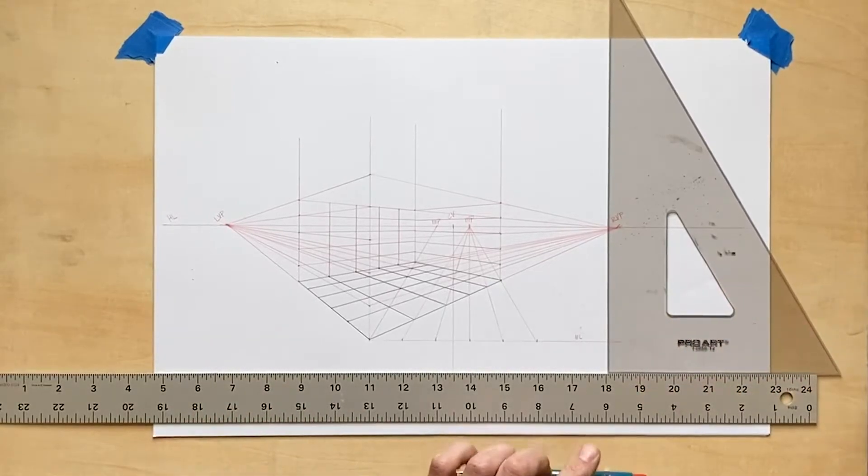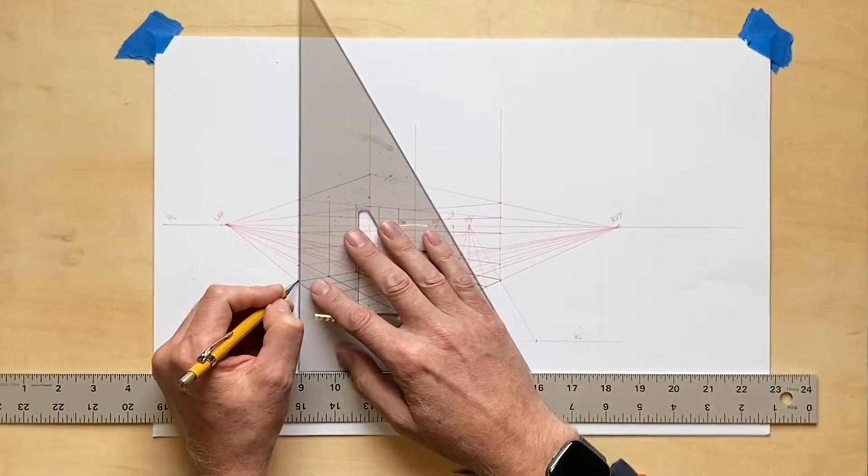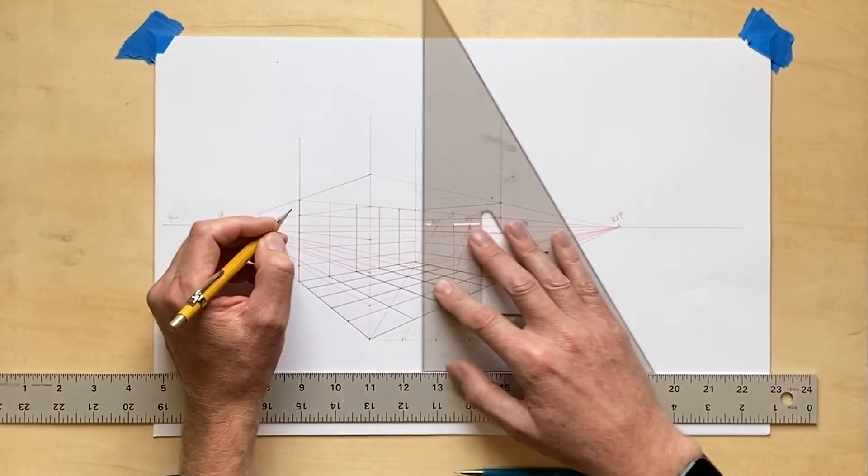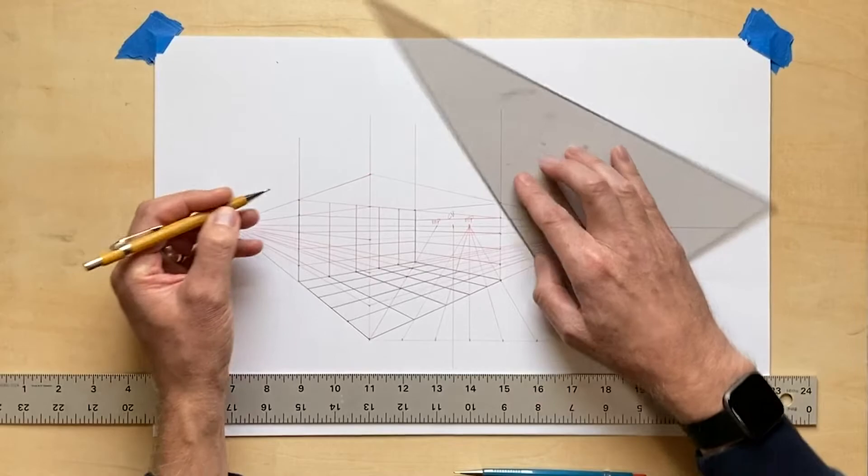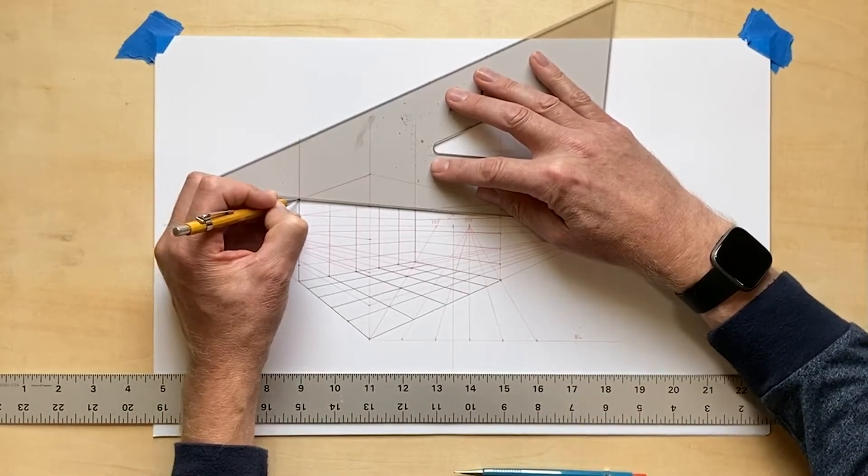As I complete that left back wall, I switch to my graphite pencil to darken the new grid on that wall. I will repeat this whole process for the wall on the right once I'm finished.